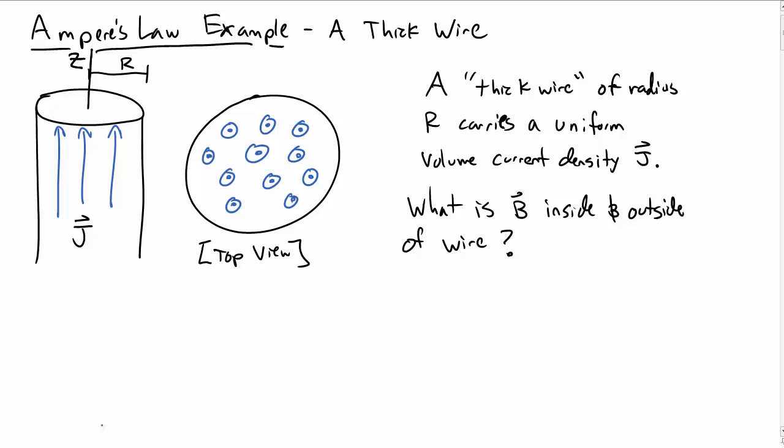This wire is carrying a uniform volume current density j upwards in the z direction. What is the magnetic field b inside and outside of the wire? We expect the magnetic field to depend on s and only point in the phi hat direction.